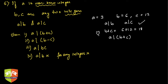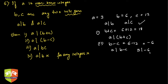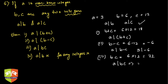For property two, b minus c is 6 minus 12 equals minus 6. Clearly 3 divides minus 6 because 3 times minus 2 gives minus 6 — property two is validated. For property three, b times c is 6 times 12 equals 72, and clearly 3 divides 72 since 3 times 24 is 72.